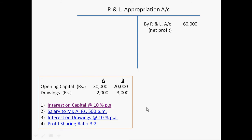The first provision is regarding interest on capital. Firm will allow interest on capital at the rate of 10% per annum. So here A's capital is 30,000 and its 10% is 3,000. B's capital is 20,000 and its 10% is 2,000. So firm will allow 3,000 to Mr. A and 2,000 to Mr. B as interest on capital.